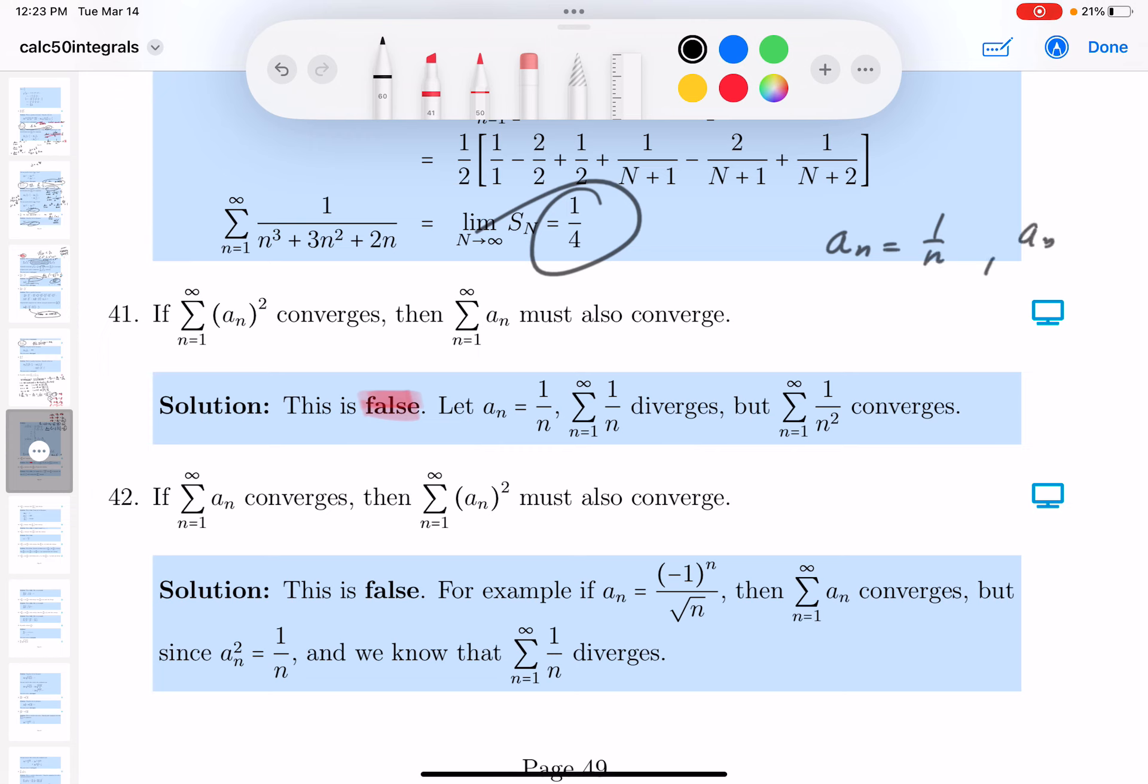a_n, when I square it, would be 1 over n squared. So what do I know? I know this is convergent.